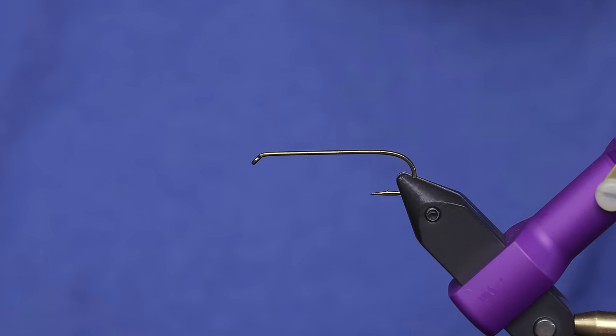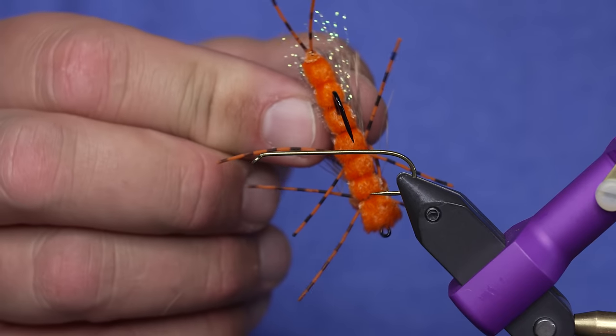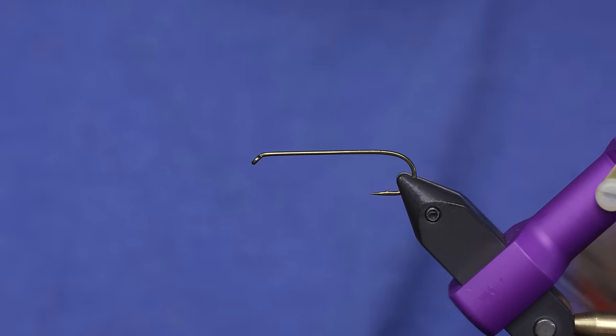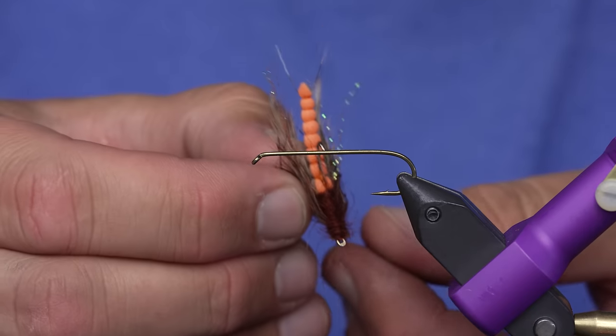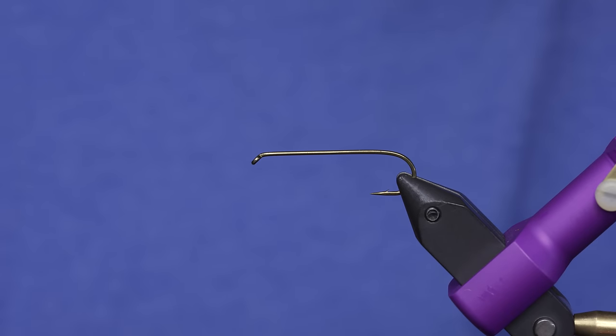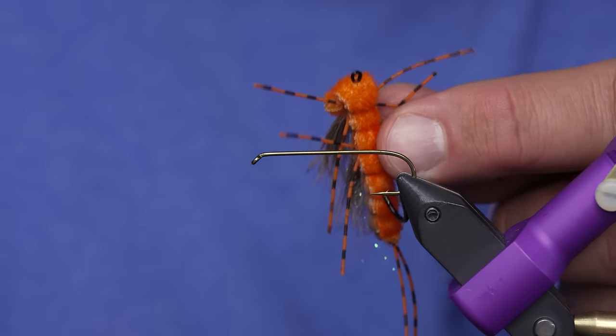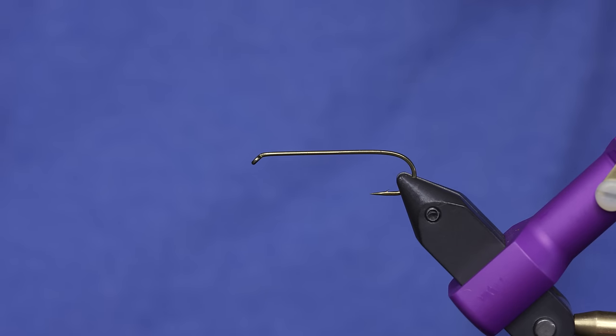But when we look at the fly bins in a lot of shops, and these are from our own shop, like we have this one, we've got this one, we've got this one, which are great flies, but frankly before I fish this one I'd probably take a marker to it.